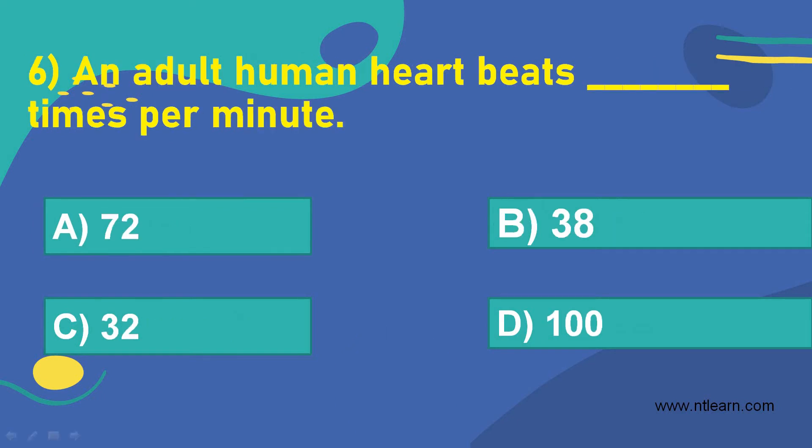Let's move on to the next question. An adult human heart beats dash times per minute. Option A, 72. Option B, 38. Option C, 32. Option D, 100.